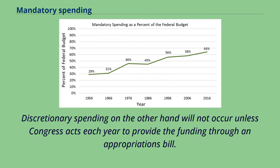Discretionary spending, on the other hand, will not occur unless Congress acts each year to provide the funding through an appropriations bill.